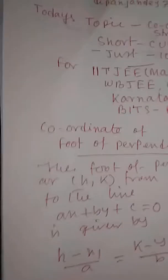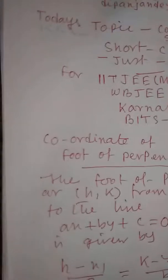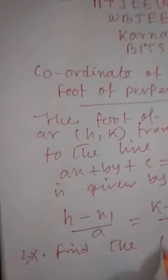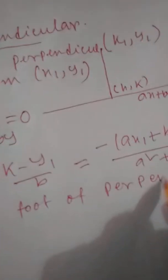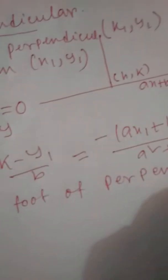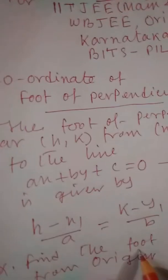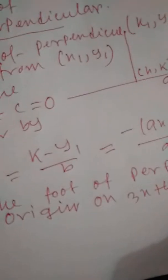Now I am giving a sum. Find the foot of perpendicular from the origin — origin means (0, 0) — to the line 3X + 4Y + 25 = 0.